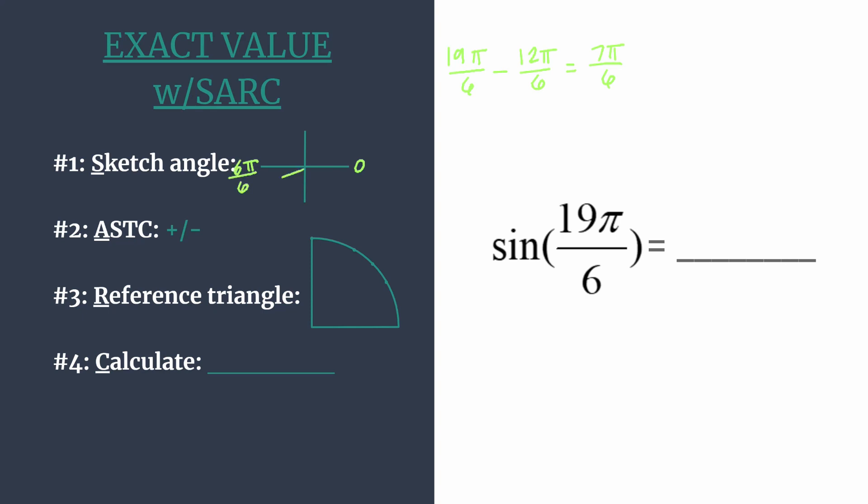And then you'll know that 7π over 6 must be just past that, the terminal side is in the third quadrant here. Okay, great. So now we have our angle's terminal side sketched, we're ready for step 2.